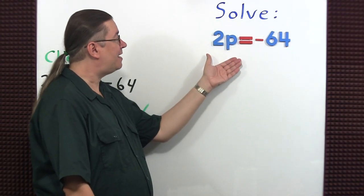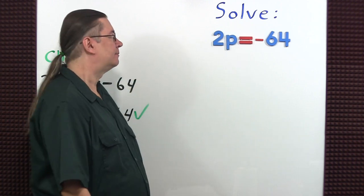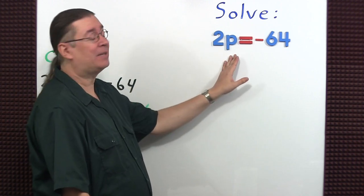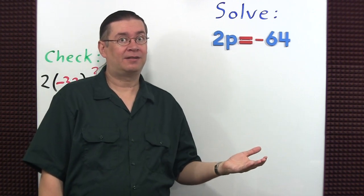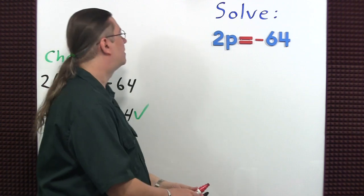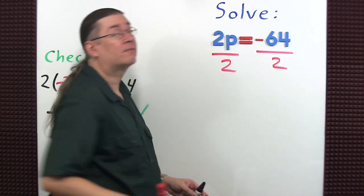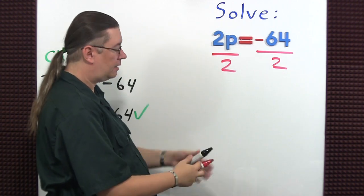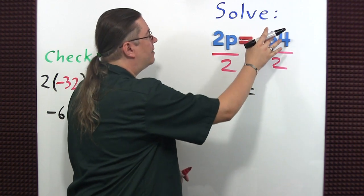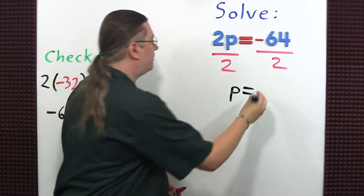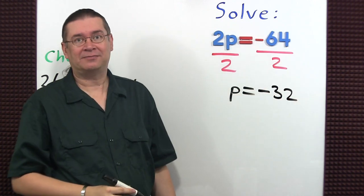Here I have two P, so I better go to the bathroom. The variable P is being multiplied by two, so you need to divide by two to remove it. Let's do that. And of course, on the other side. The twos cancel, I'm left with just the variable. Negative divided by positive is negative. 64 divided by two is 32. We're done.